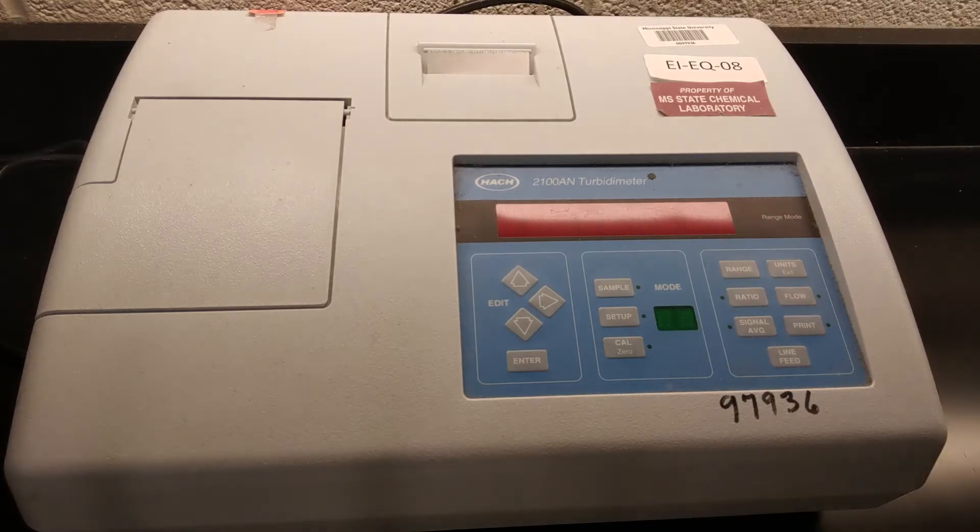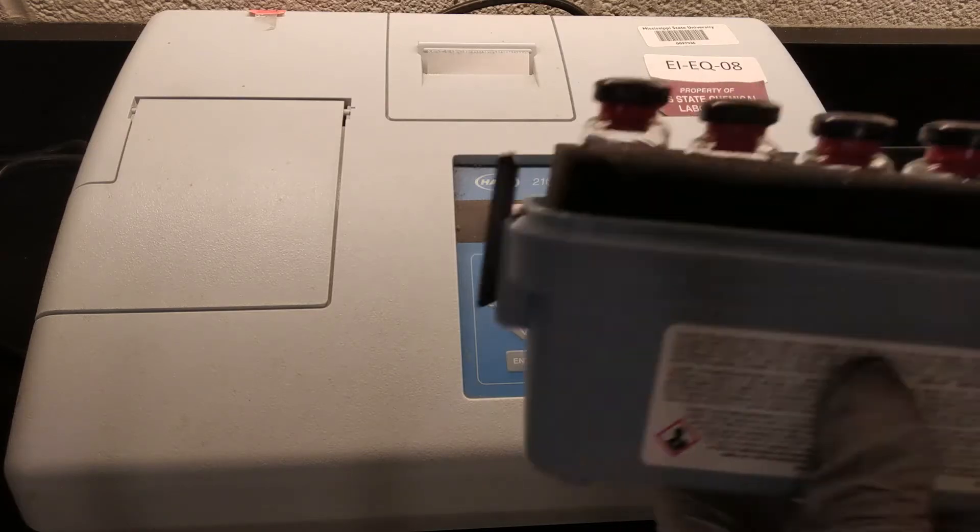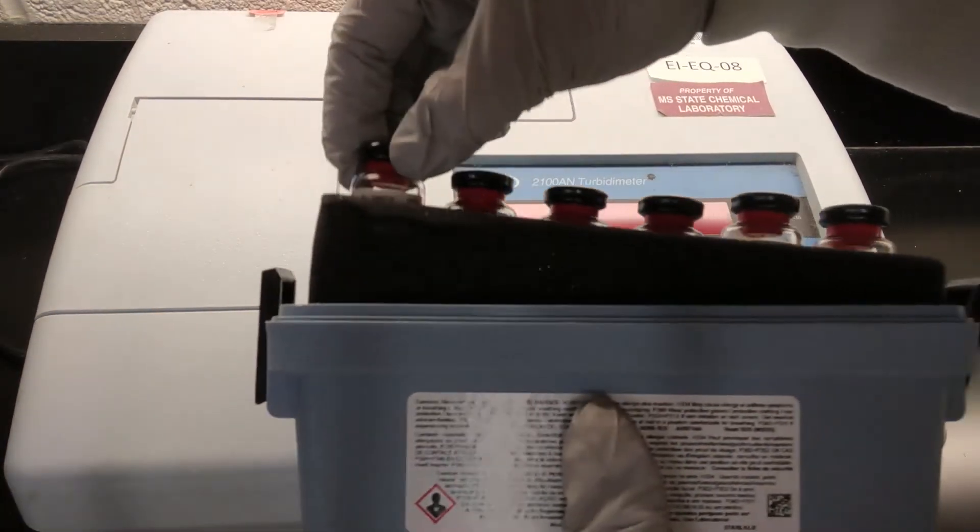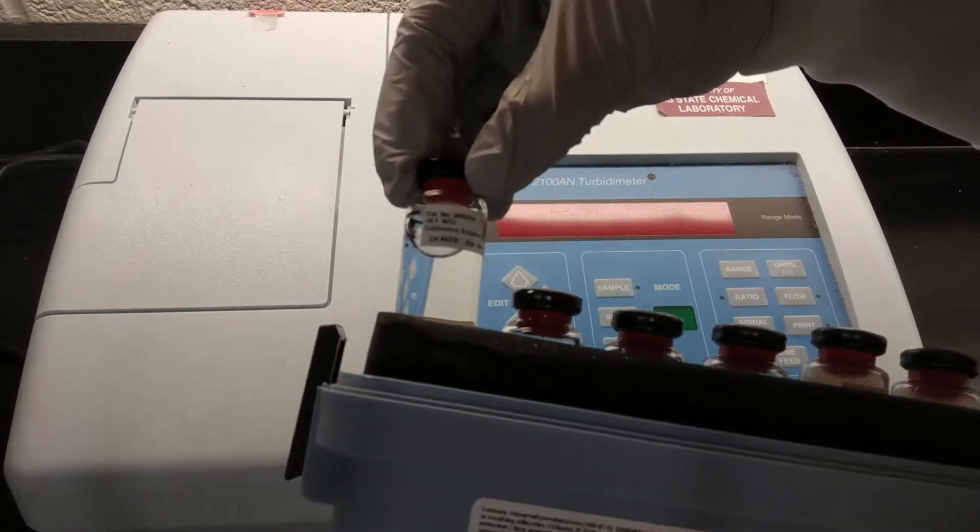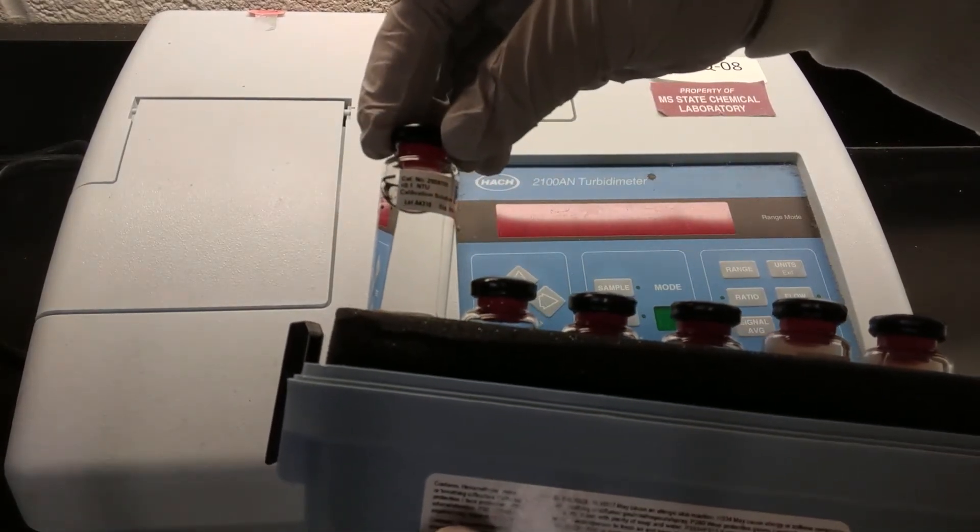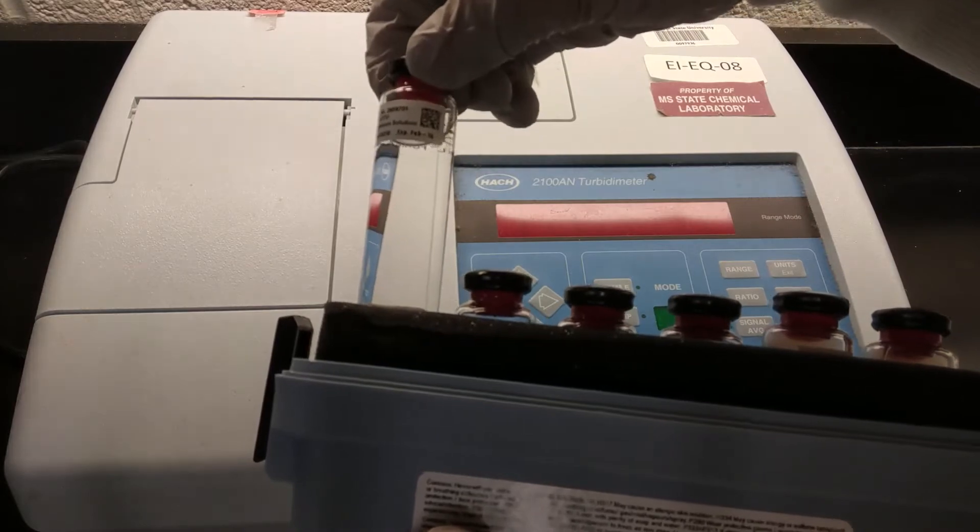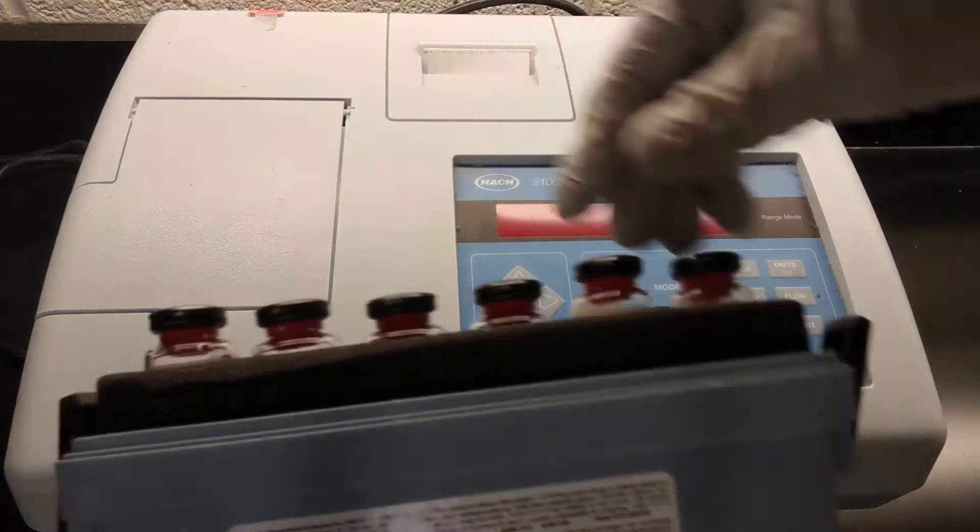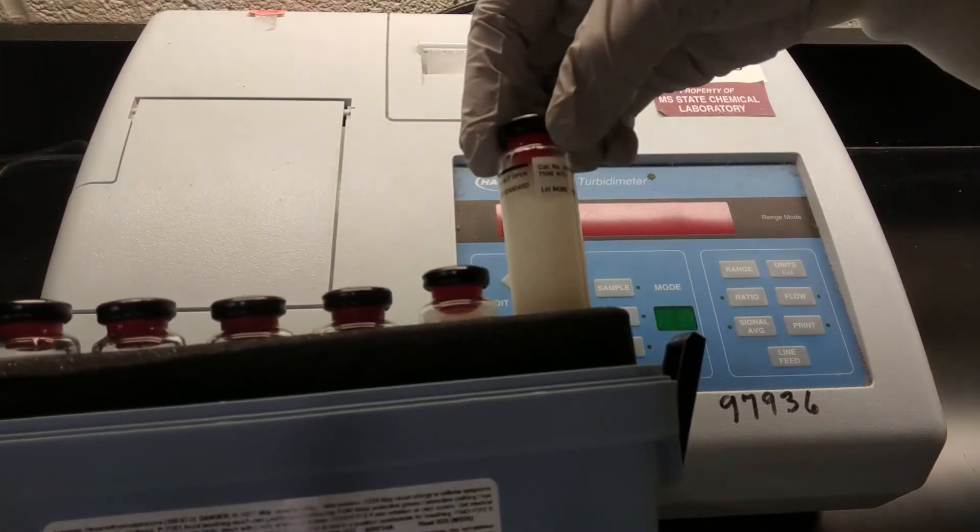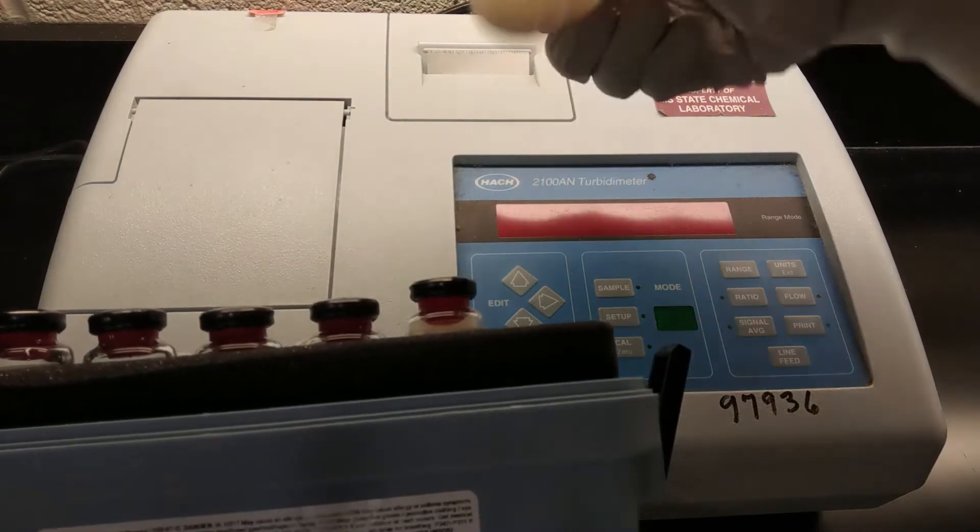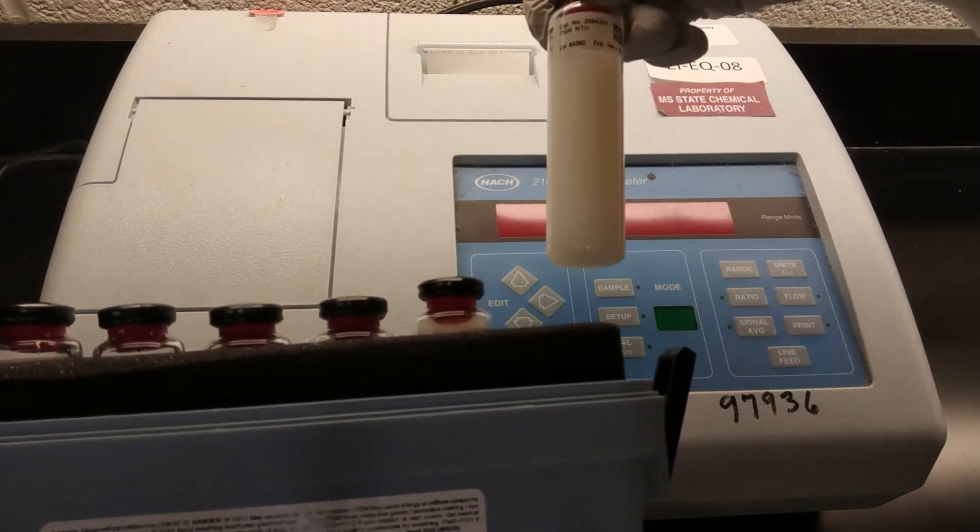And then also our calibration cells. So these are sealed containers with various known levels of turbidity. So for instance, this is our less than 0.1 NTU solution. You can see it's pretty clear versus here is our 7500 NTU solution. It's very cloudy. It almost looks like milk.